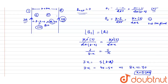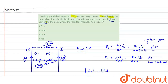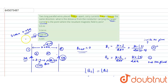Since the options give the distance in metres, 5 centimeters equals 0.05 metres. Option C states the distance is 0.05 metre, so option C is the correct answer for this question.